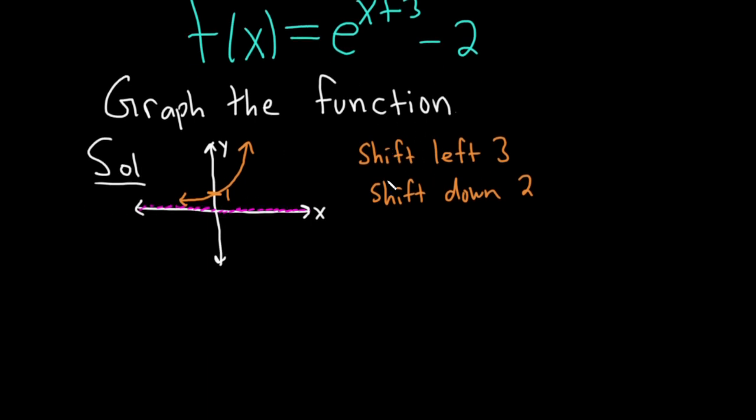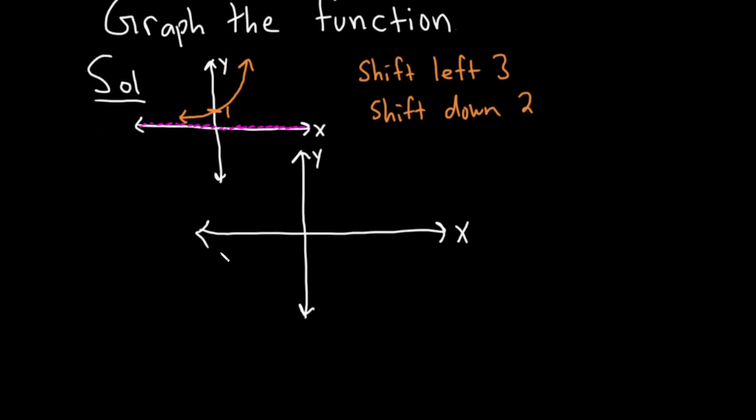Now we're just going to attempt to graph it. Not going to be a perfect graph by any means, but let's see if I can do a decent job. So here's x, here's y. When it goes down, it's definitely going to cross the axes. So let's find the intercepts.